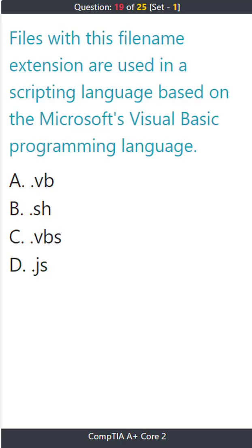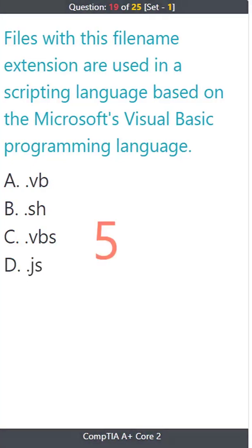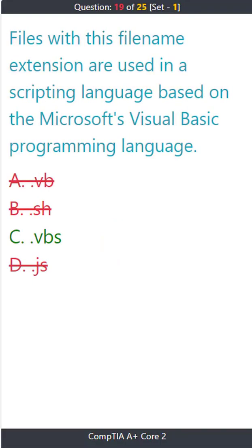Question 19: Files with this file name extension are used in a scripting language based on Microsoft's Visual Basic programming language. A) .vb. B) .sh. C) .vbs. D) .js. The correct answer is C: .vbs.